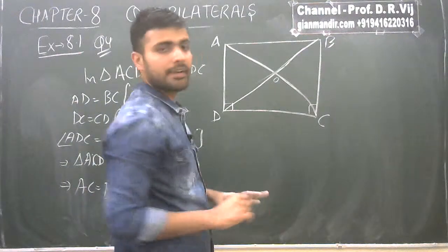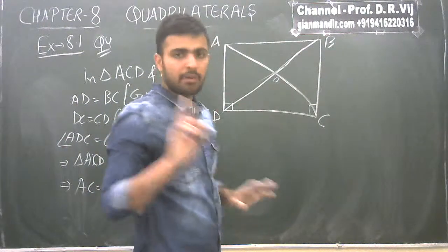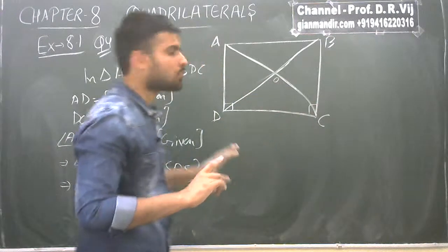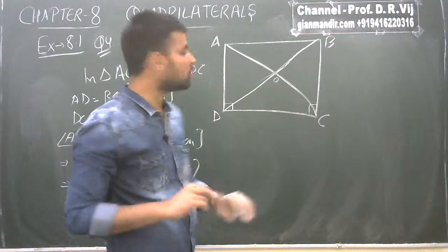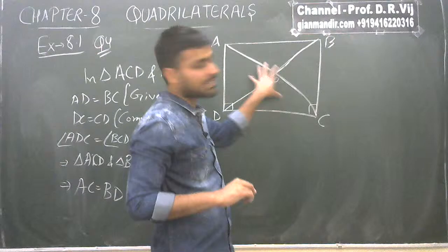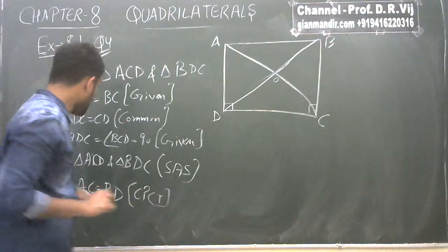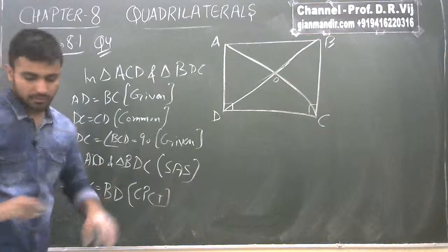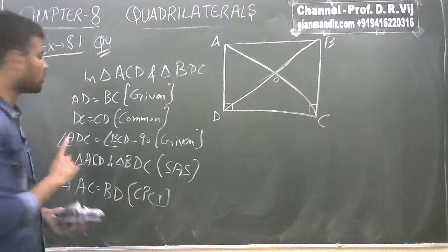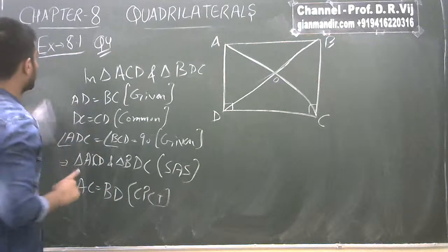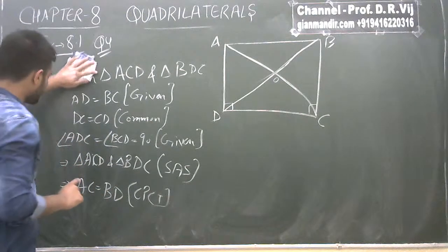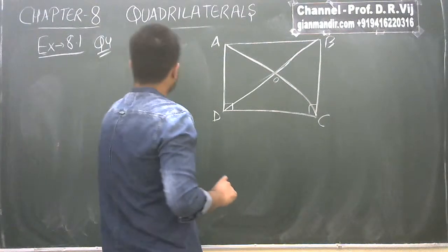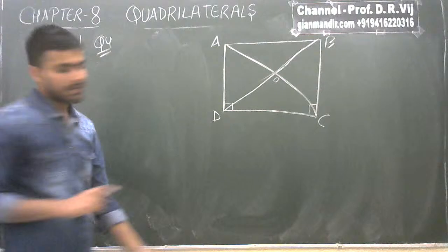We have now proved the first part — that the diagonals are equal: AC equals BD. Now we have to prove the second part — that the diagonals bisect each other at 90 degrees. Let me label the angles at the intersection: angle 1, 2, 3, 4, 5, 6, 7, 8.